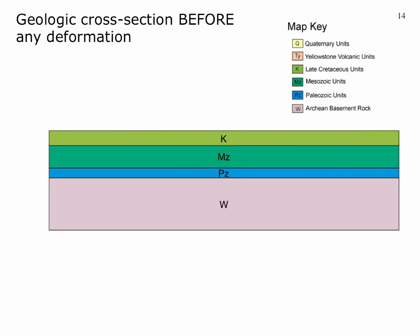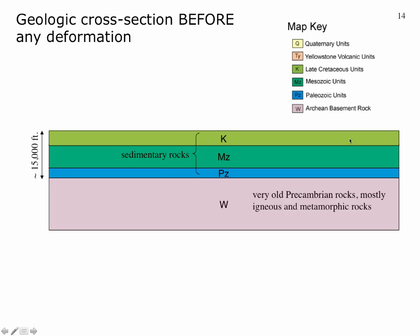If we made a cross-section west to east across this area before any faulting, it would look pretty simple: old rocks on the bottom — the 2.8 billion-year-old igneous and metamorphic rocks — then blue, green, and lighter yellow-green sedimentary units stacked on top, about 15,000 feet thick, roughly three miles of geologic history recorded in those sediments. Everything in a simple layer cake.